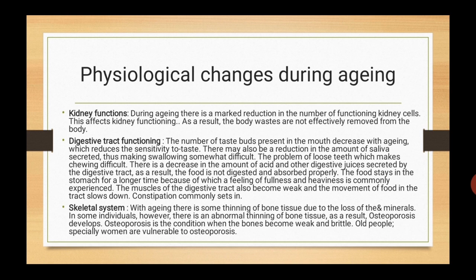Last physiological change is in the skeletal system. Bone is made up of two minerals: calcium and phosphorus. With aging, there is some thinning of bone tissue due to loss of these minerals. If there is an abnormal thinning of bone tissue, it will lead to development of osteoporosis — a condition in which bones become weak and brittle.